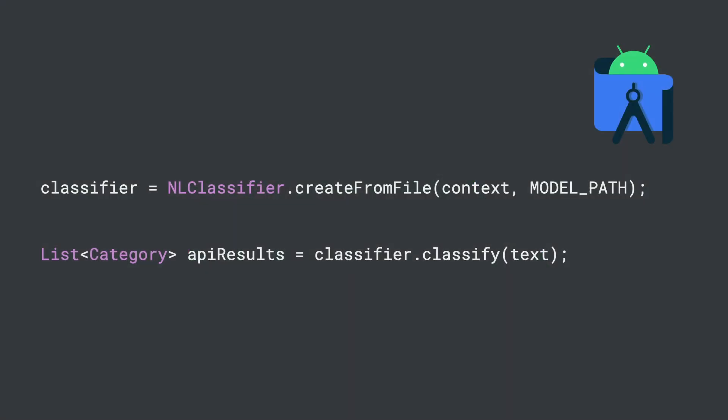For Android developers, that's where the task library comes in, and it's actually pretty simple to use. You give the classifier your text — it's just a string like you're used to — and the task API will do the tensor conversion under the hood. It'll give you back a list of results. The category object is built into the task APIs and can give you details about the classification, such as the probability that the value is spam or not.